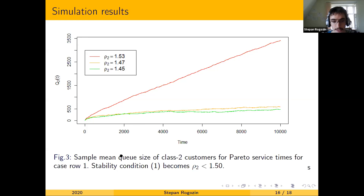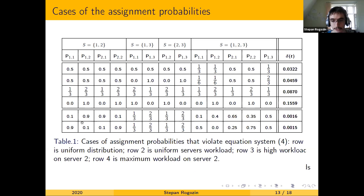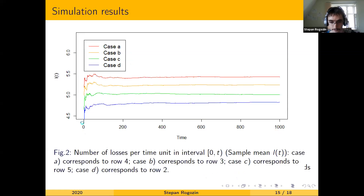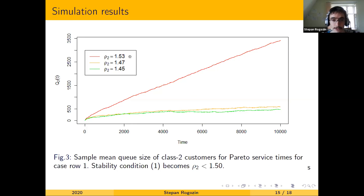Here you can see the sample mean queue size of class two customers per server over time. For the case in row one, which satisfies the equation system, we show different values of rho two. In this example, the stability condition of the system becomes rho two less than 1.5, and we can see that the simulation confirms this stability condition.